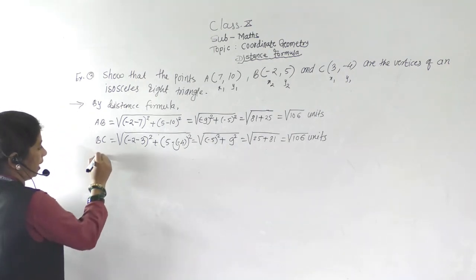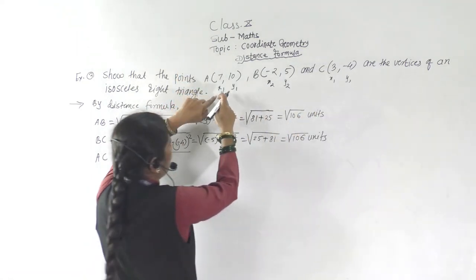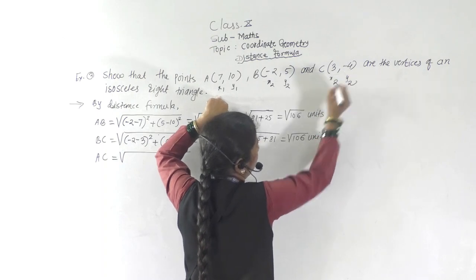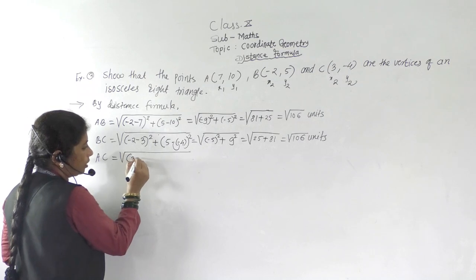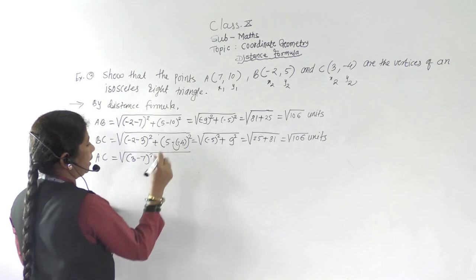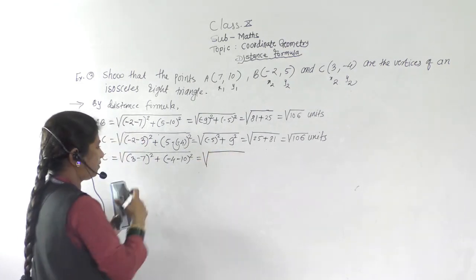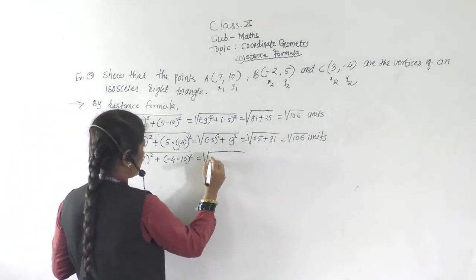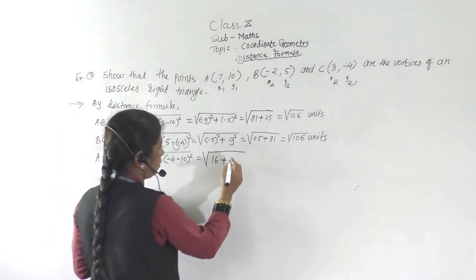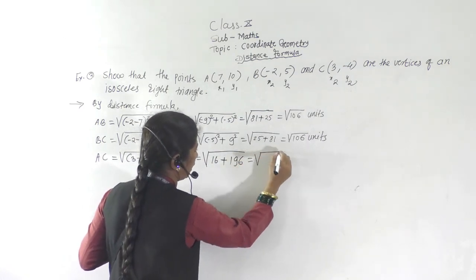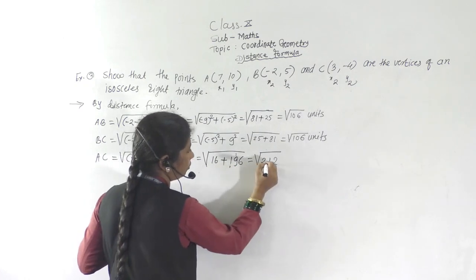For AC: √[(3−7)² + (−4−10)²] = √[(−4)² + (−14)²] = √[16 + 196] = √212 units.